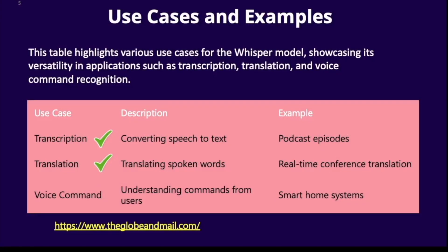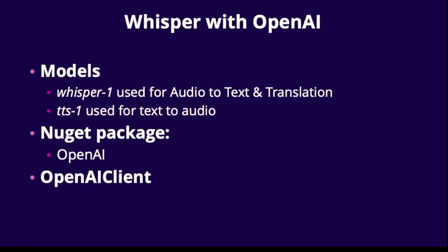Some use cases for this model include transcription — changing from audio to text and text to audio — translation, and voice command. I'm giving demos on transcription and translation, not on voice command. For Whisper with OpenAI, Whisper 1 is used for audio and text translation, and TTS 1 is used for text to audio. The only NuGet package you need is the OpenAI package, and the entry point class is the OpenAI client, which we'll register in dependency injection.